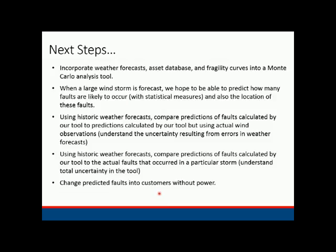We're going to do two validation tests: first using historic weather forecasts to calculate predictions from our tool and comparing them to predictions using actual wind observations — looking at uncertainty from errors in the weather forecasts. Then we'll use historic weather forecasts and compare predicted faults from our tool to the actual faults that occurred for particular storms, giving us an understanding of tool accuracy. The final step will be to convert fault information into consumers without power.